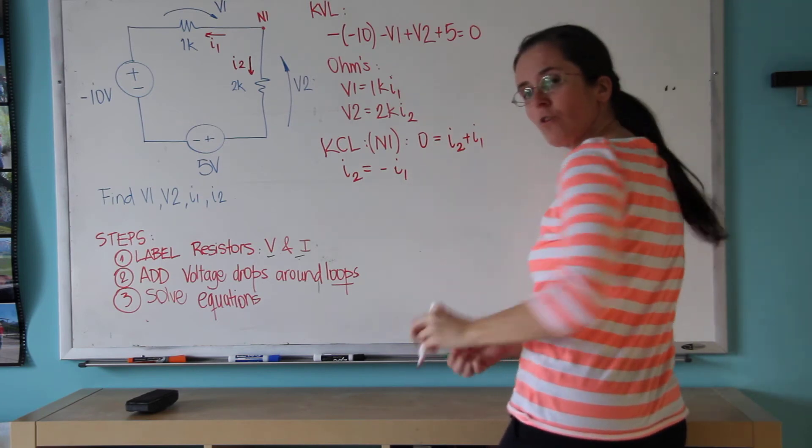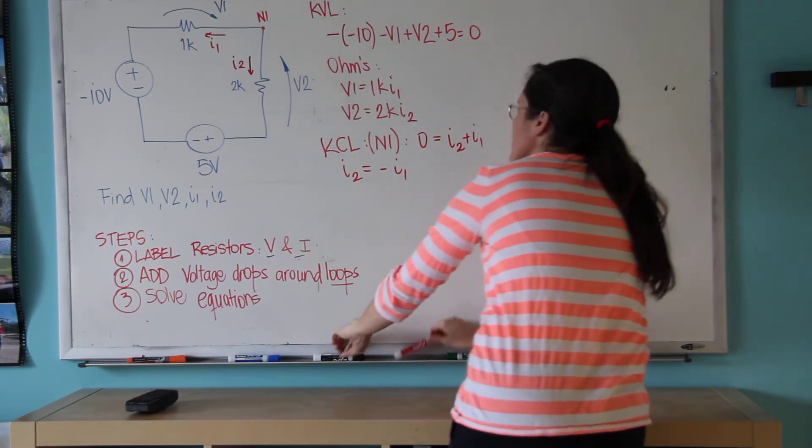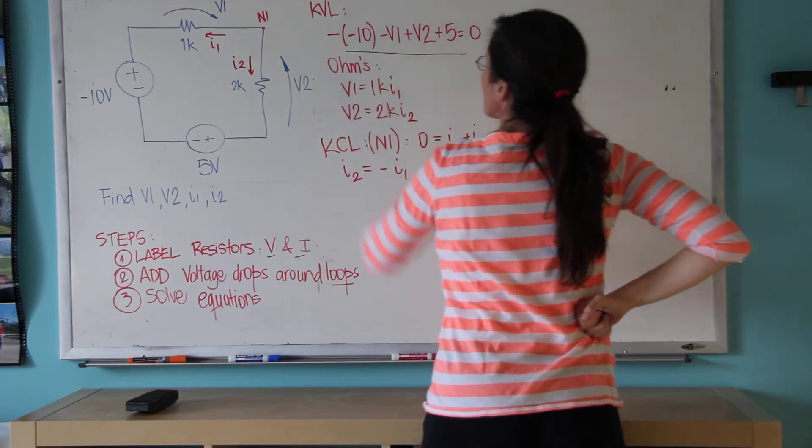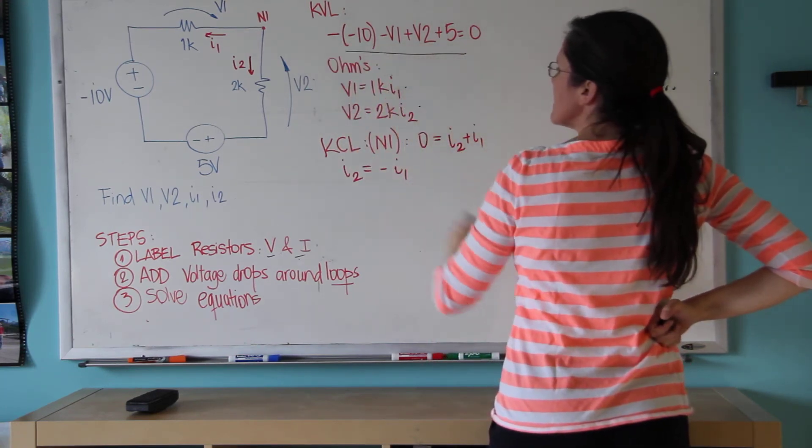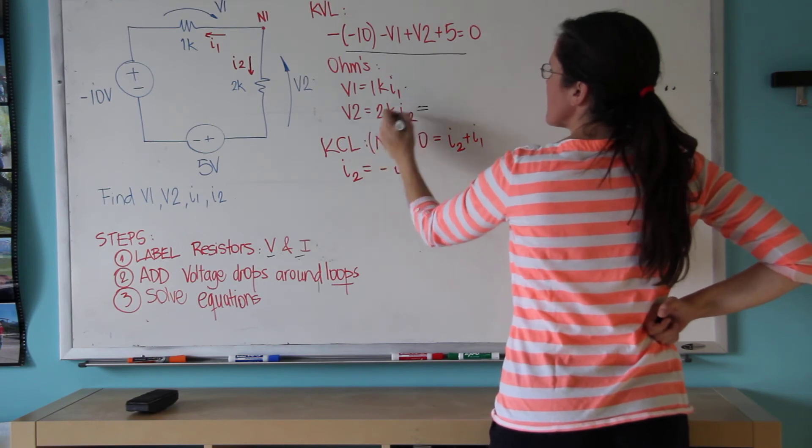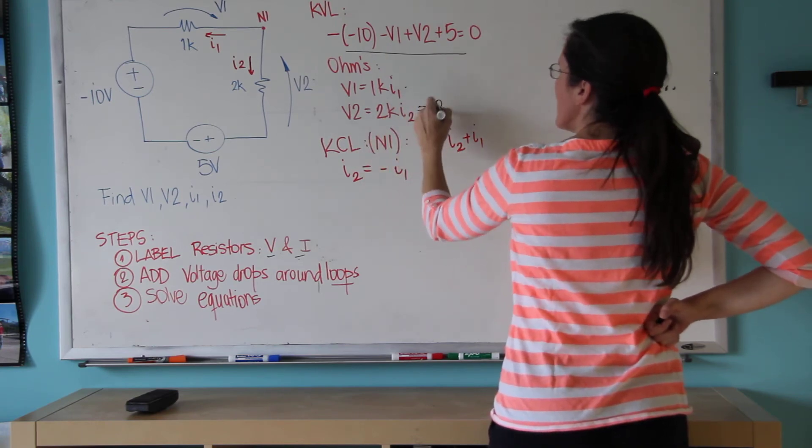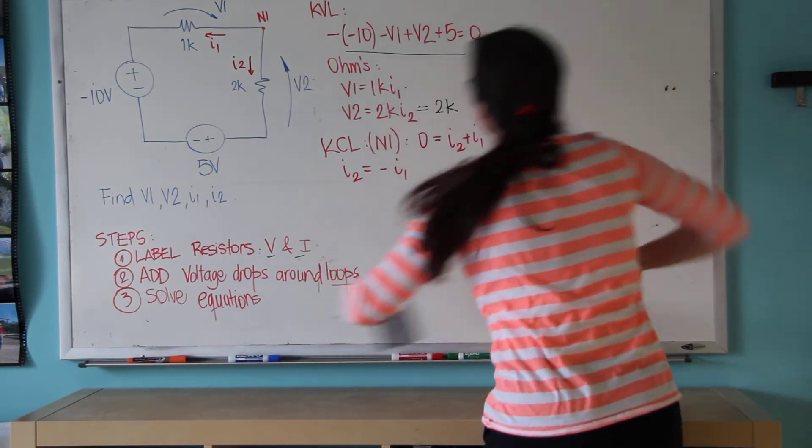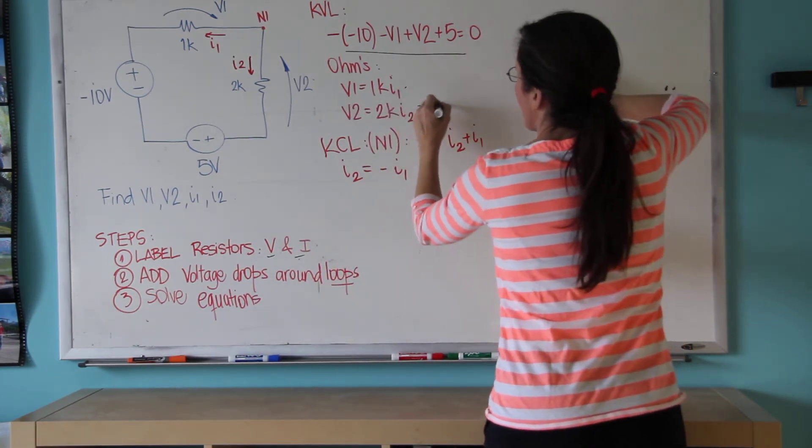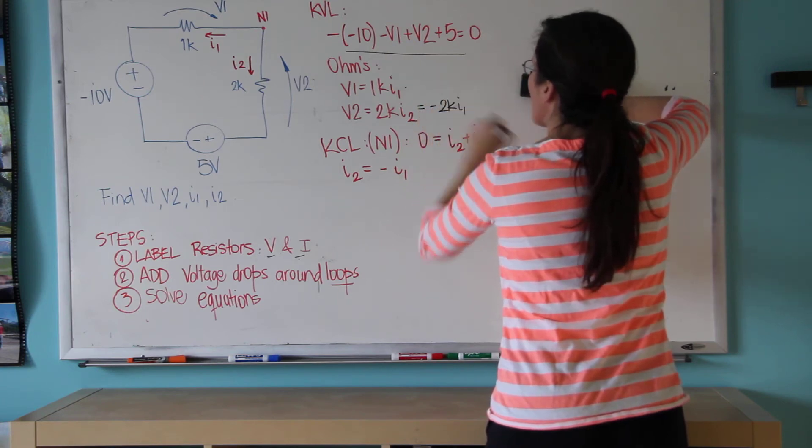And now look, I'm going to use all these pieces of information. I want this equation to be solved. But V2 equals 2K times I2, which is 2K times minus I1 because of this. So I'm going to say minus 2K times I1.